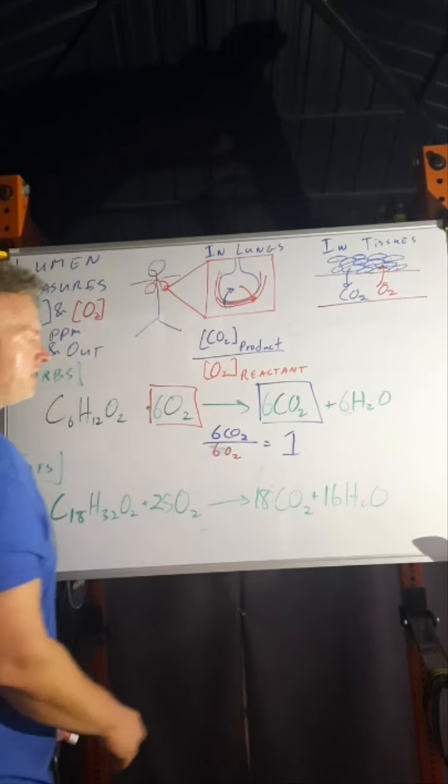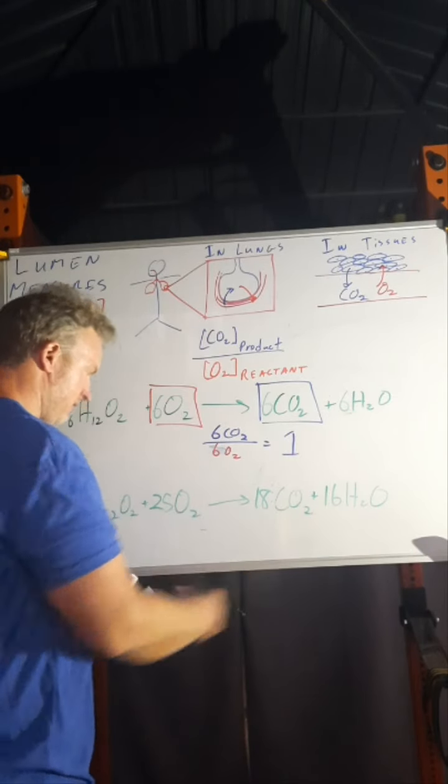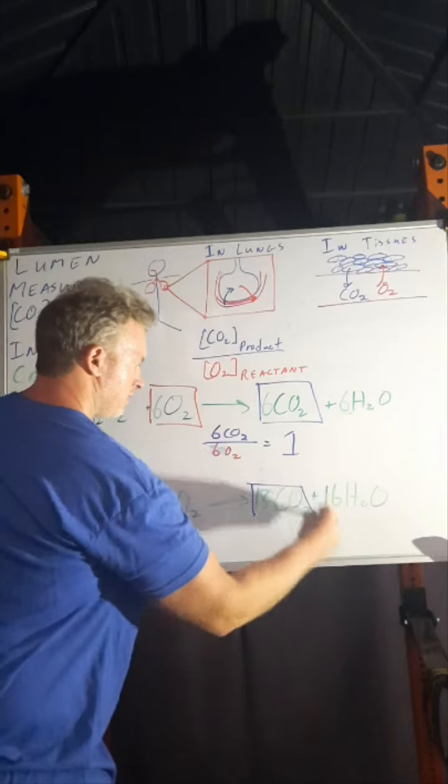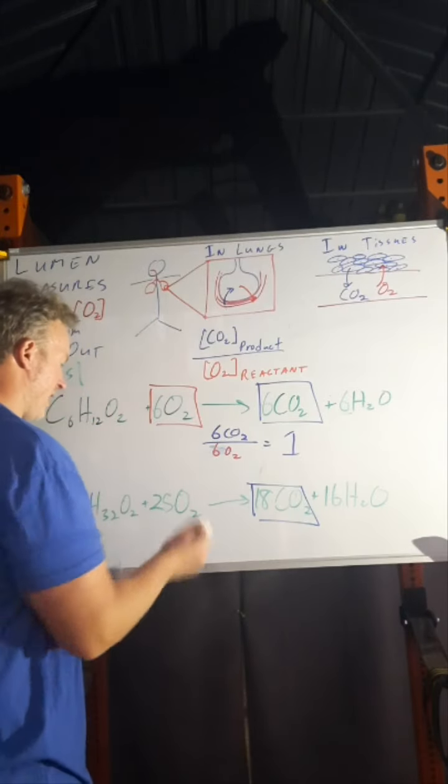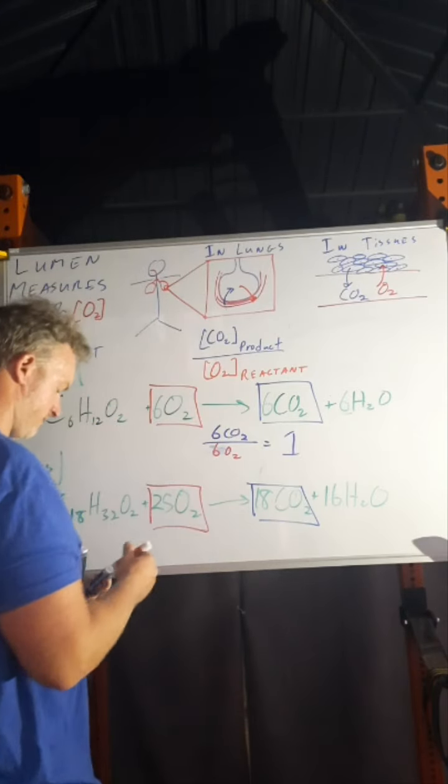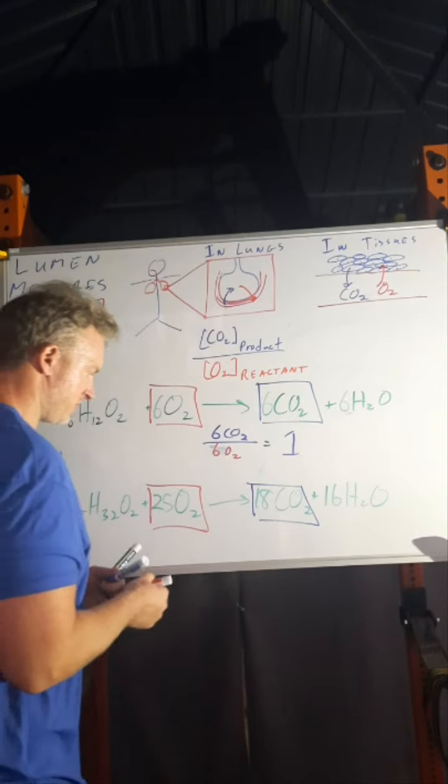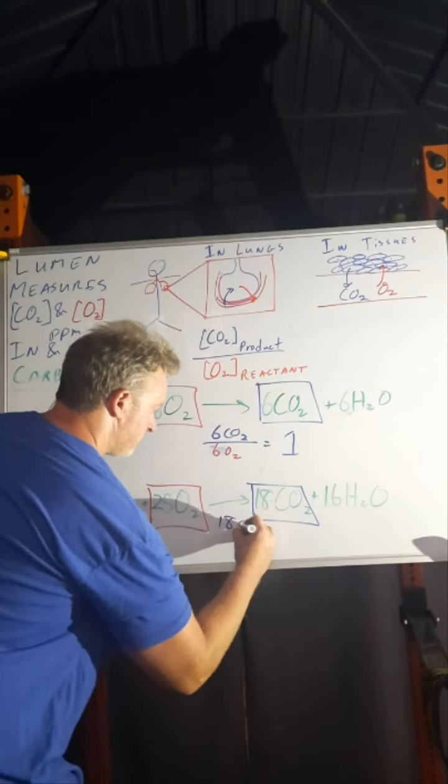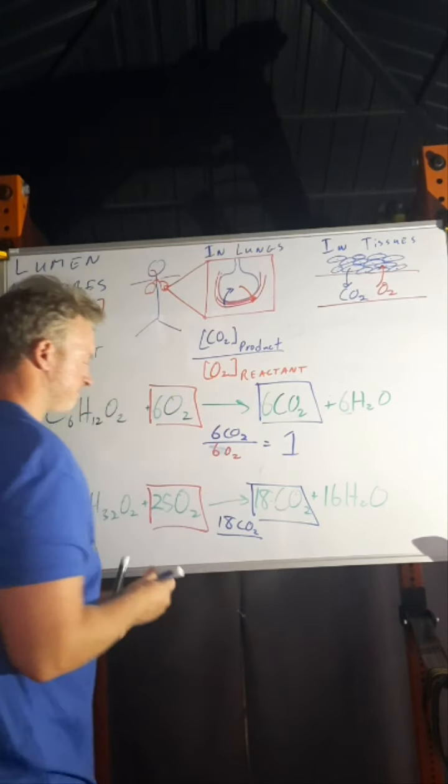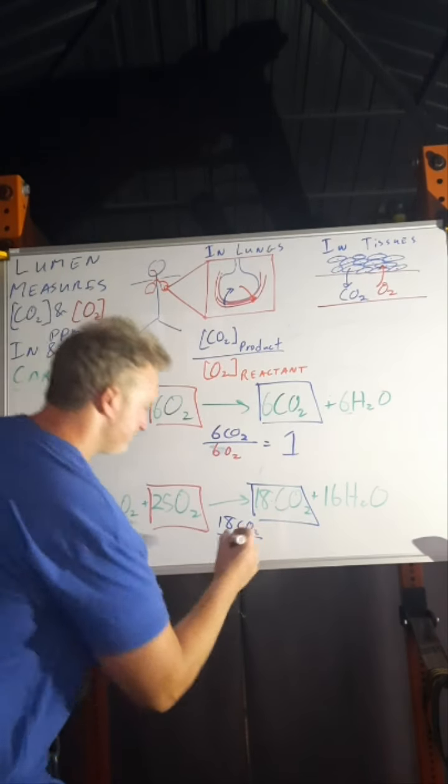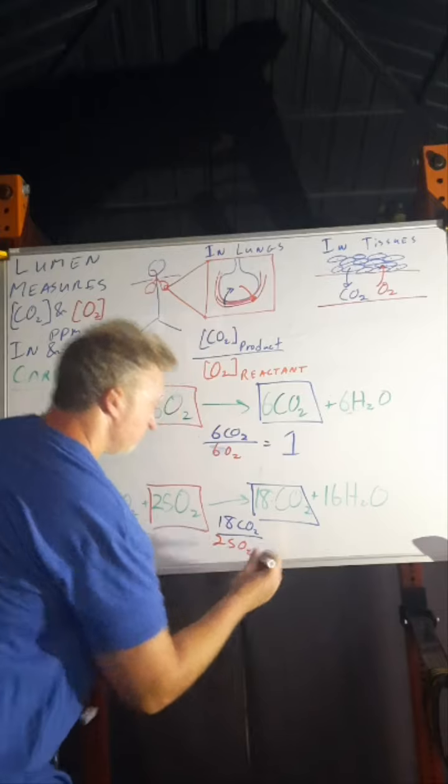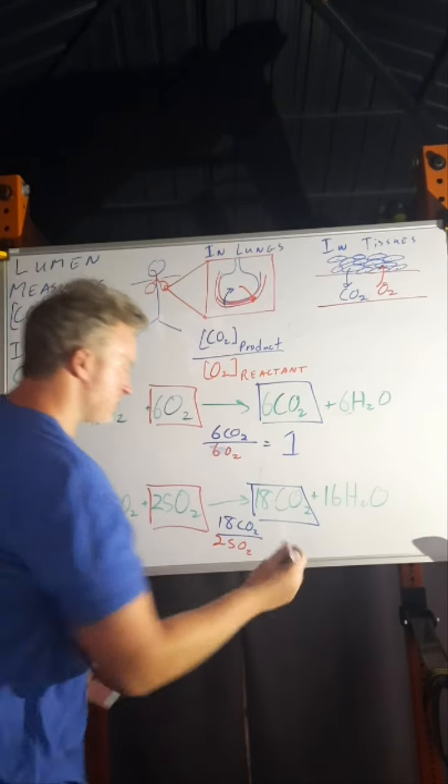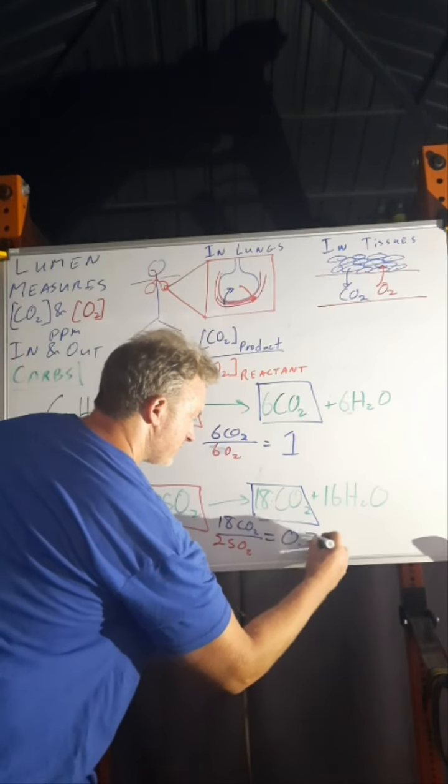For linoleic acid, that ratio is 18 divided by 25 from these respective numbers here. This comes out to 0.72.